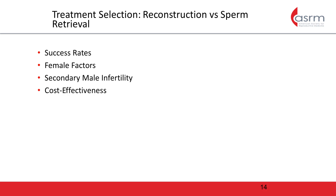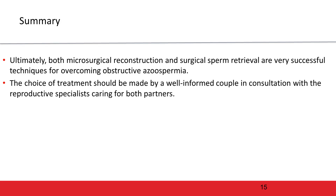Cost-effectiveness is also an important component of decision-making for patients with obstructive azoospermia. For couples who hope to conceive more than a single pregnancy, microsurgical reconstruction may be more economical, since it affords the opportunity for couples to conceive naturally. However, IVF ICSI may be a more effective use of resources among couples with female partners over age 40, or those with diminishing ovarian reserve that are still deemed appropriate candidates for assisted reproduction. Additionally, if the couple desires pre-implantation genetic testing to avoid a potentially adverse and costly birth outcome, IVF ICSI is the most economical option. If costs for either microsurgical reconstruction or sperm retrieval with IVF ICSI are too high, adoption and donor sperm are alternative family-building options that should be discussed.